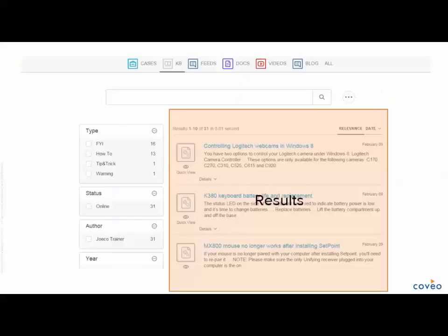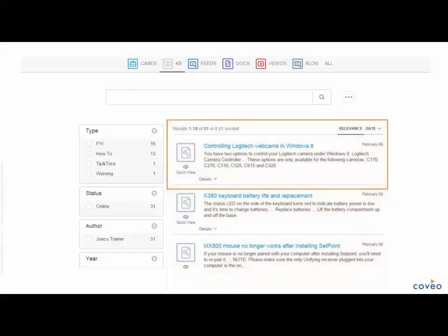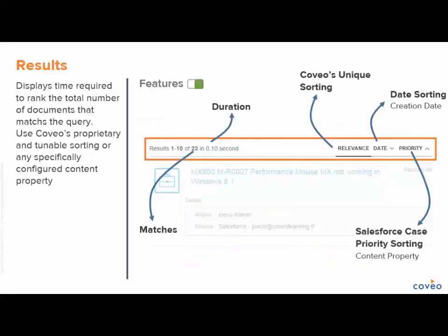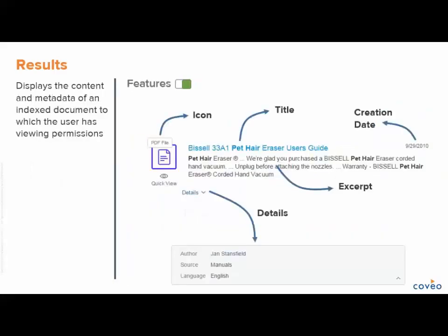This leaves us with our last section: results. The result list is composed of two elements: information on the outcome of processing your query and how the results are sorted, and the list of results itself. Along with the list of results, a user will be shown the total number of matching results and the time required to match and rank. By default, the result list is displayed and sorted using Coveo's Relevancy Algorithm. Other options for sorting may be configured by the Coveo Administrator, such as by date, priority, file size, and more. Results may look differently from one another — what a result displays can be configured by your Coveo Administrator. For example, results for PDF documents may display content and properties differently than a Word document.